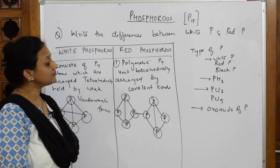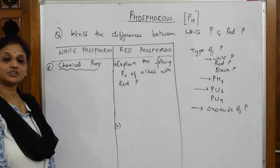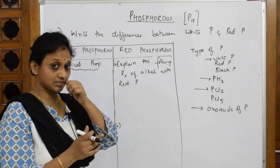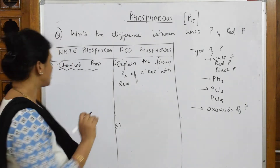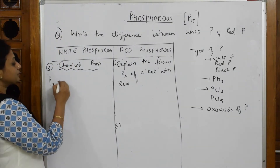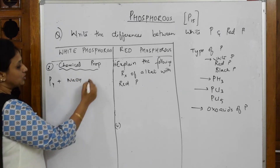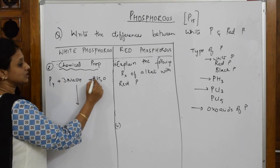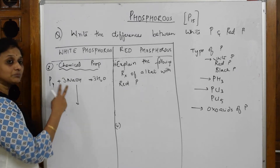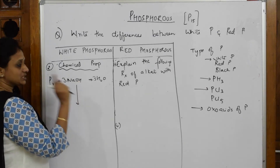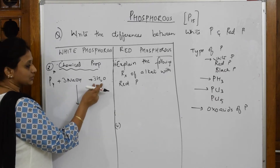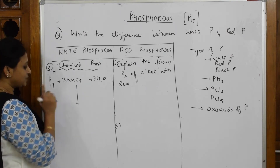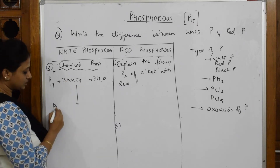Now let's do the preparation and chemical properties of white and red phosphorus. White phosphorus, being a P4 tetrahedral unit, reacts with a base. In the presence of aqueous sodium hydroxide and water — taking three moles of NaOH and three moles of water — you get a compound called phosphine (PH₃). One phosphorus from P4 combines with three hydrogens to form phosphine.